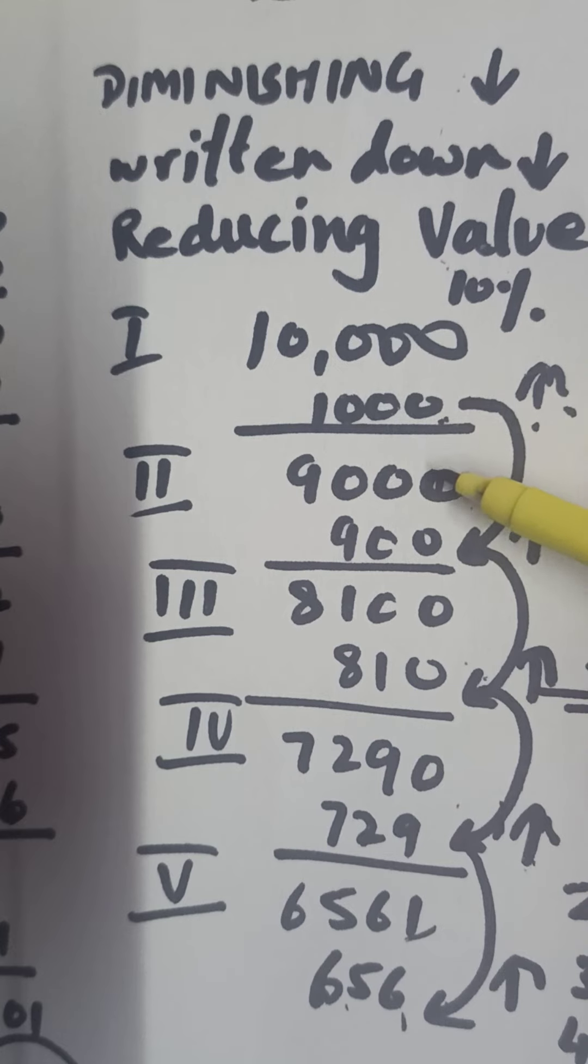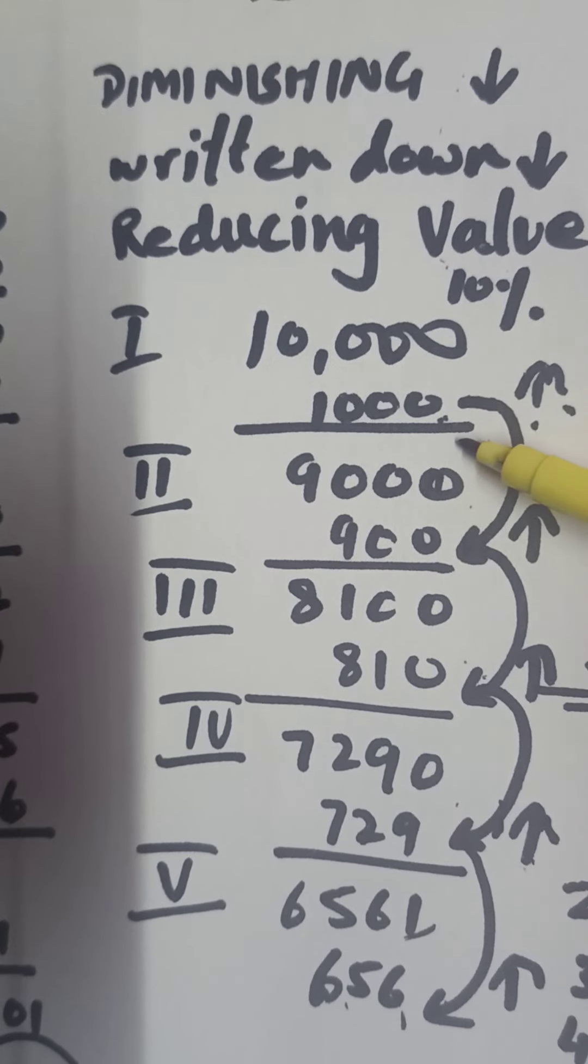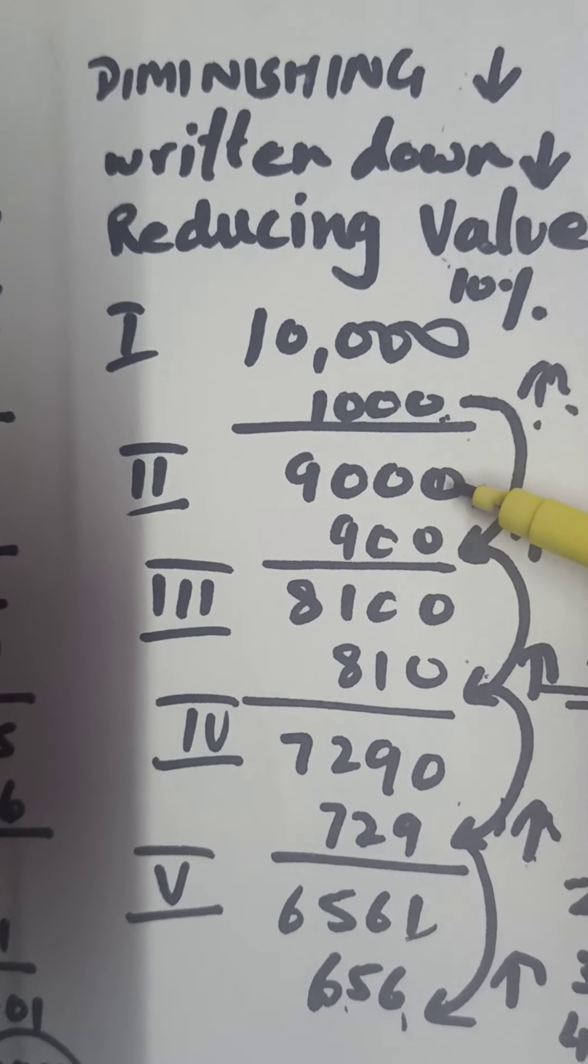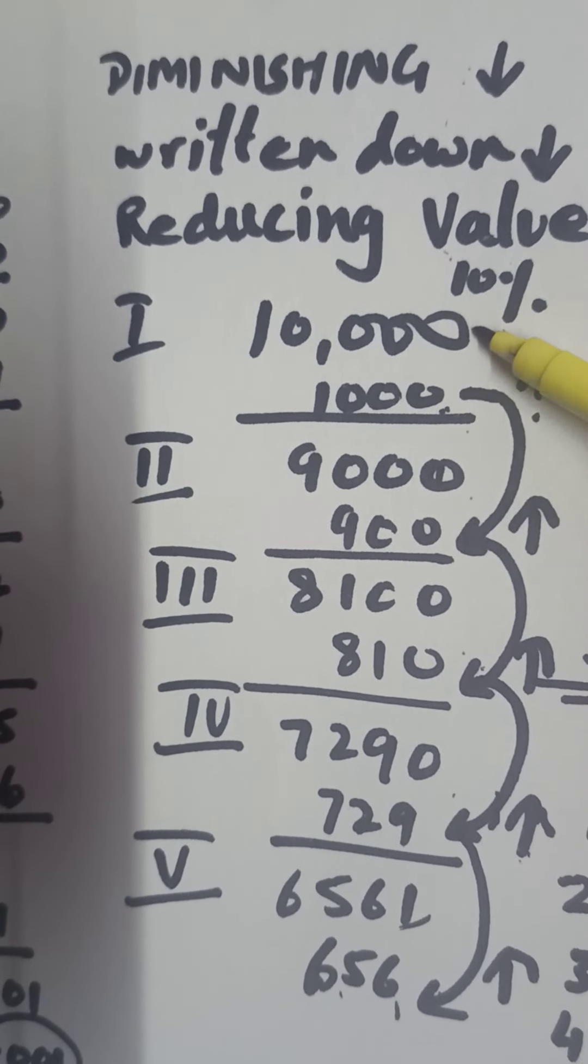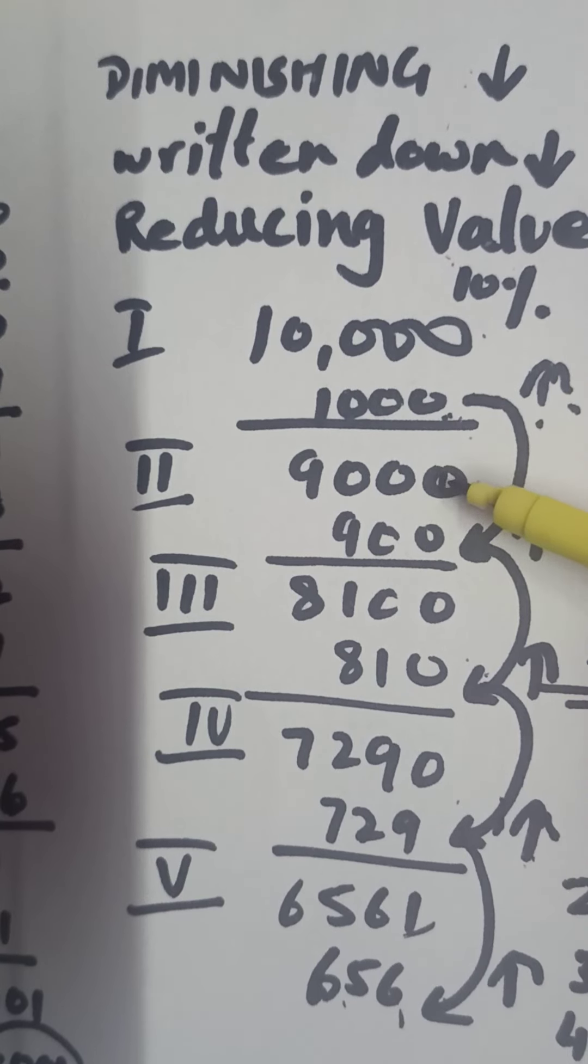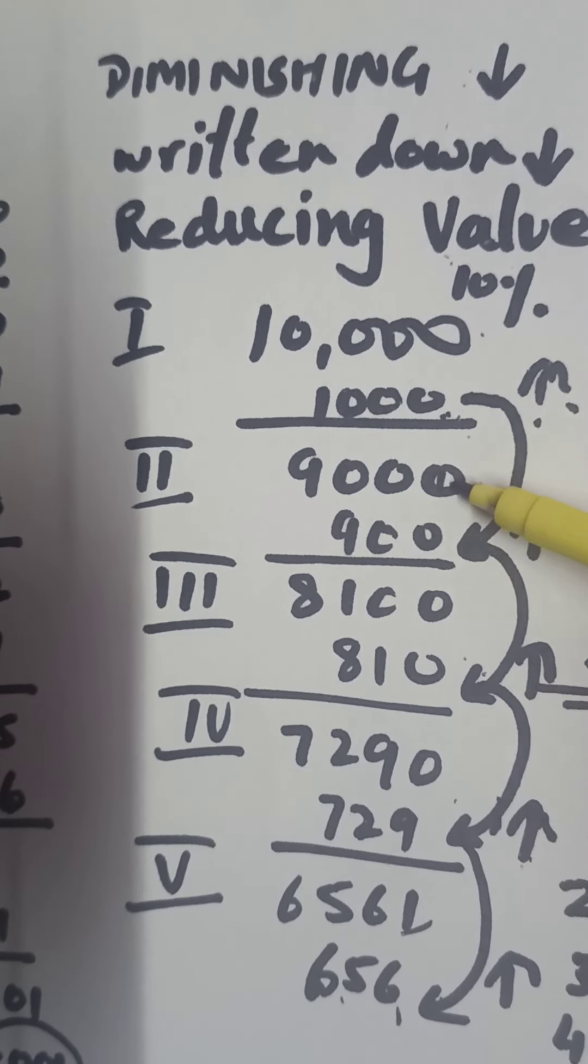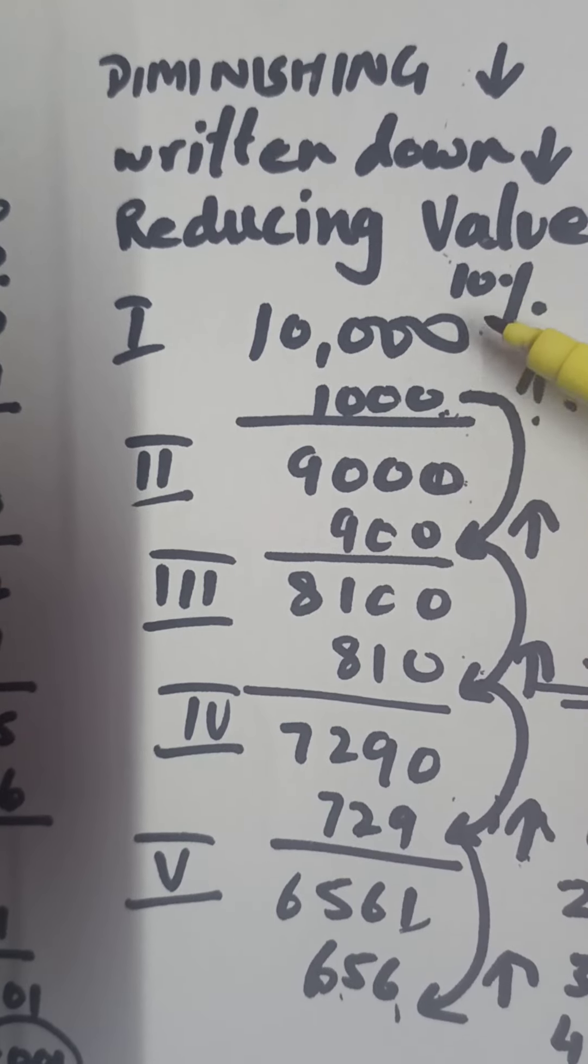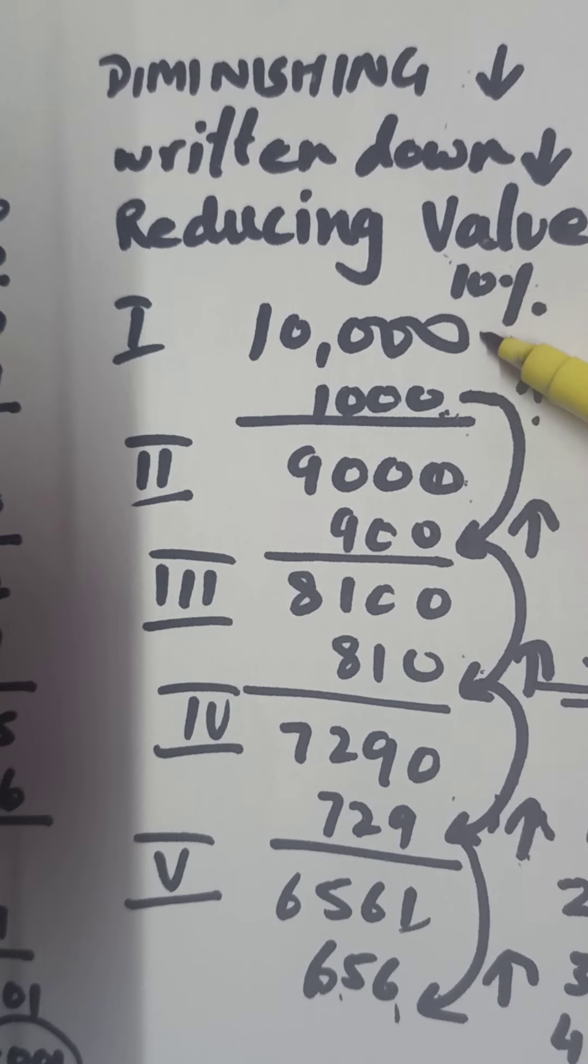And the book value at the end of the first year, or in the beginning of the second year, will come to 10,000 minus this depreciation, that is 9,000. Now here is the little departure from the fixed installment method: the 10% to be charged as depreciation in the second year will not be 10% of the original value.